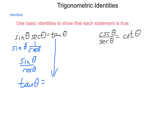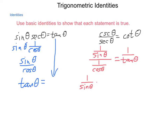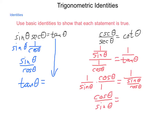Let's try it for cosecant theta divided by secant theta equals cotangent theta. Cosecant theta is one divided by the sine of theta, and we're going to divide that by secant theta, which is one over the cosine of theta, and set that equal to one over the tangent of theta. When we divide a fraction by a fraction, we multiply by its reciprocal. So we get one over sine theta times cosine theta over one. One over tangent theta gives us one over sine theta divided by cosine theta. Multiplying the left-hand side, we get cosine theta over sine theta. On the right-hand side, dividing by the fraction and multiplying by its reciprocal also gives cosine theta divided by sine theta.